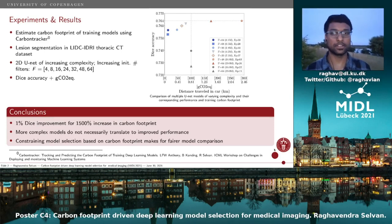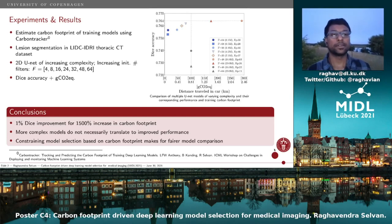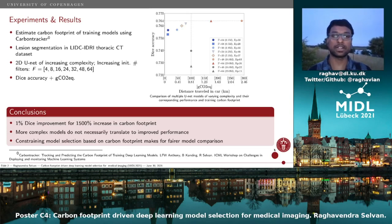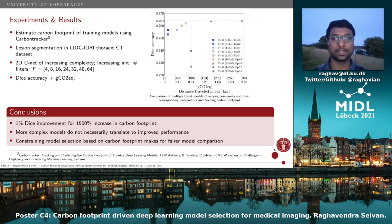We vary the complexity of this model by changing the initial number of filters, which in the U-Net's case are doubled after every downsampling operation. The measures we use are standard Dice accuracy for performing model selection. We also use the carbon footprint of training these models, measured as the CO2 equivalent in grams, using the tool Carbon Tracker, which we released last year.